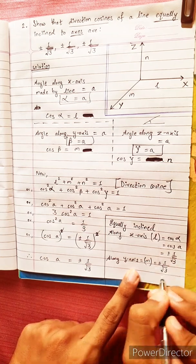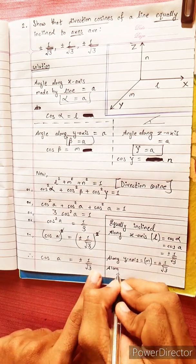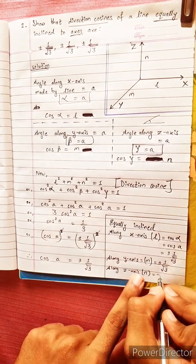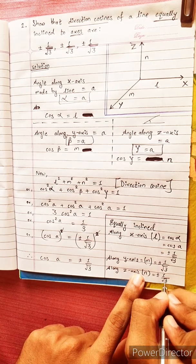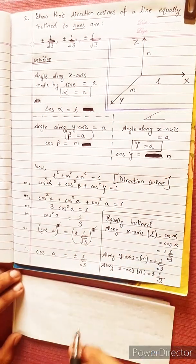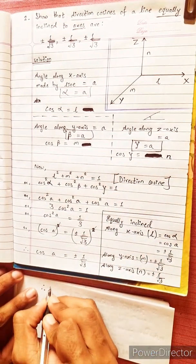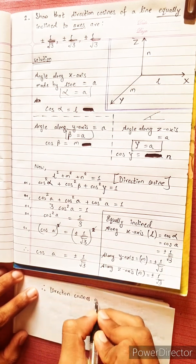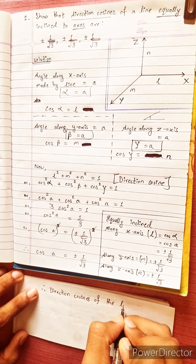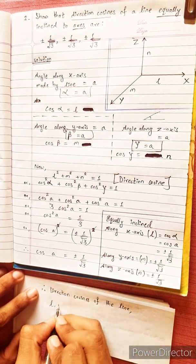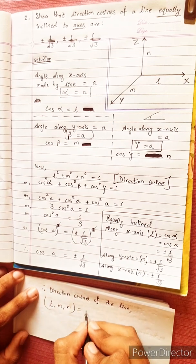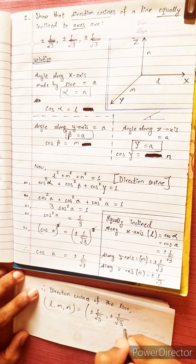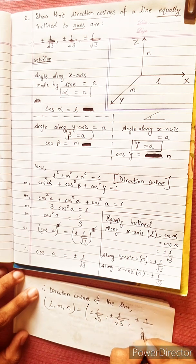Along the y-axis, M equals plus or minus 1 by under root 3. Along the z-axis, N equals plus or minus 1 by under root 3. Therefore, the direction cosines of the line are L, M, N equals plus or minus 1 by under root 3, plus or minus 1 by under root 3, plus or minus 1 by under root 3.